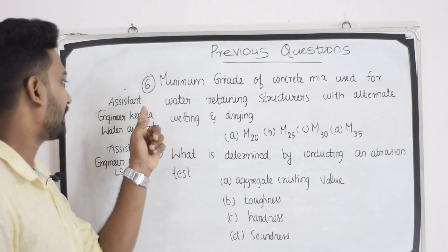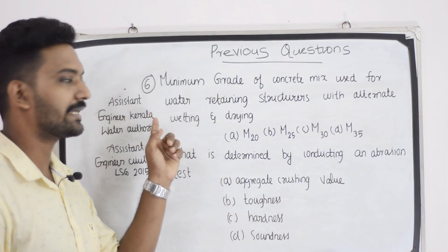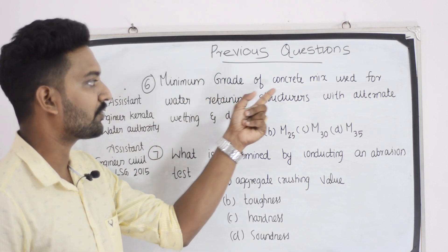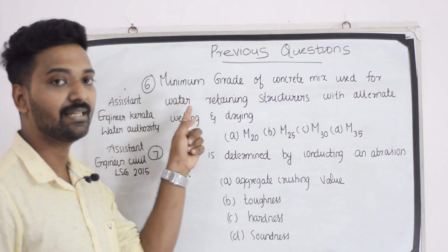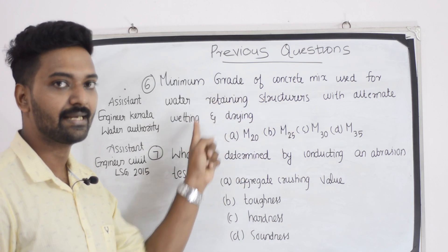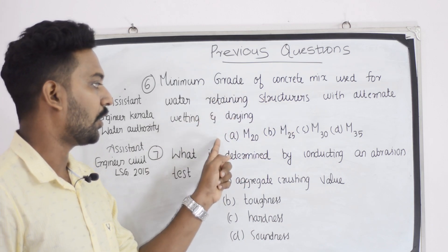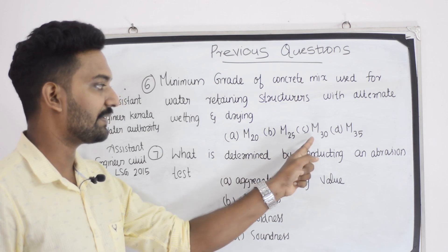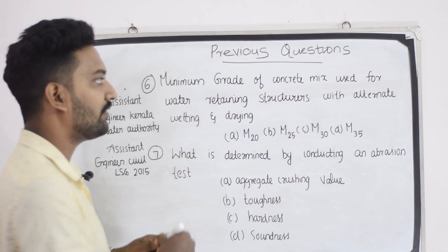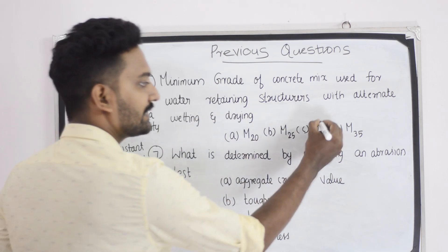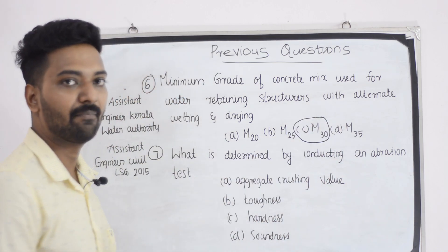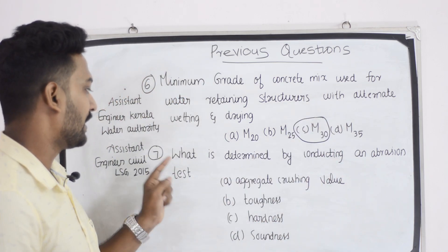Number six question — for an assistant engineer at Kerala Water Authority: what is the minimum grade of concrete mix used for water retaining structures with alternate wetting and drying? Option M20, M25, M30 and M35. The answer is M30.